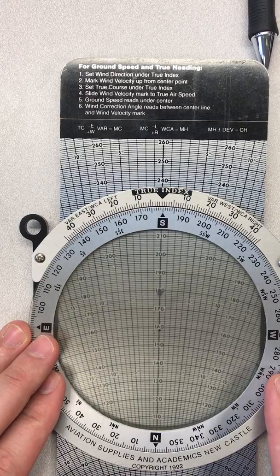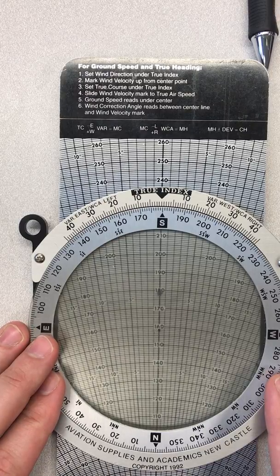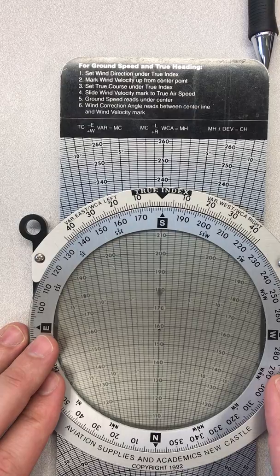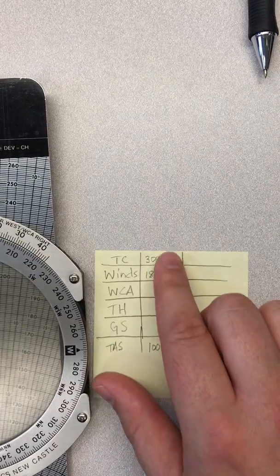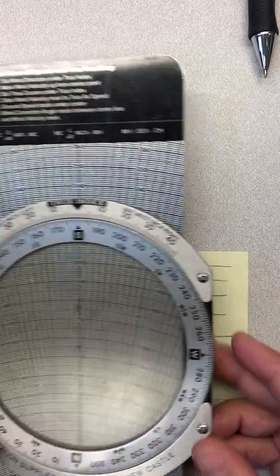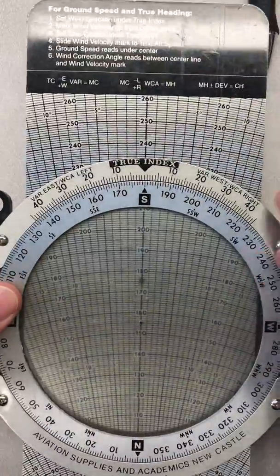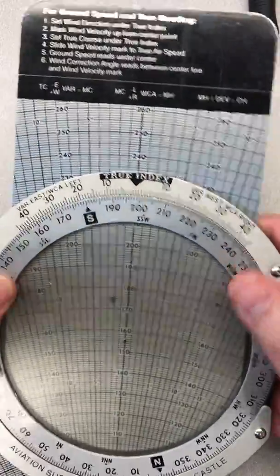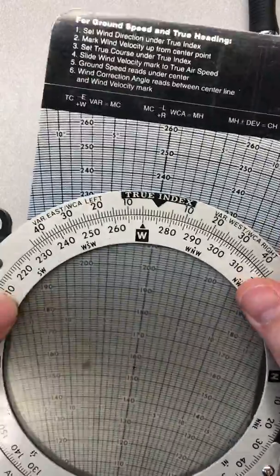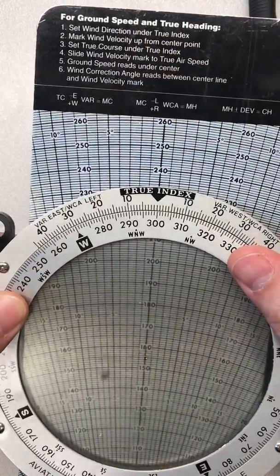We've done number two. Number three asks us to set our true course now under the true index. Our true course we should already have determined, I just used a random number here, 300. So now we're going to roll our true course to match our true index, true course 300, roll it around under the true index, and that would be step three.